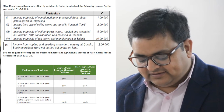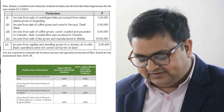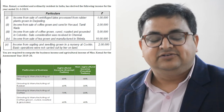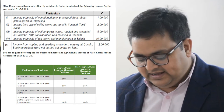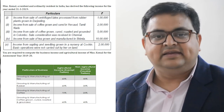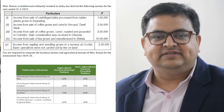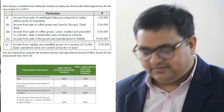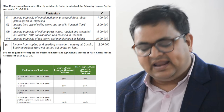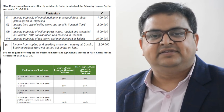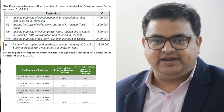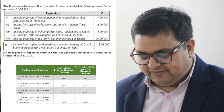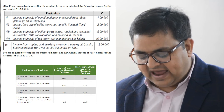The fourth point says income from sale of tea grown and manufactured in Shimla. Shimla is in India. For tea, we take 60:40 - 60 percent is towards agriculture and 40 percent is towards business income. So from 10 lakh, 60 percent, that is 6 lakh, will become agriculture income.